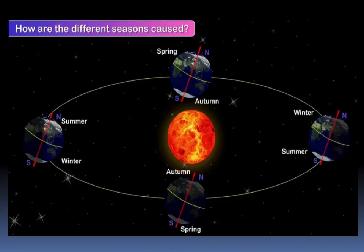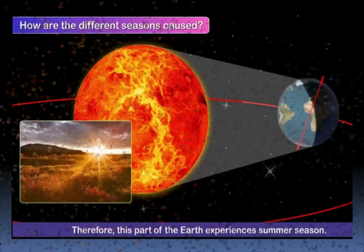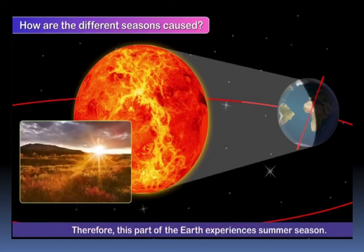The part near the sun has longer and warmer days because of the direct sun rays that it receives. Therefore, this part of the earth experiences summer season.